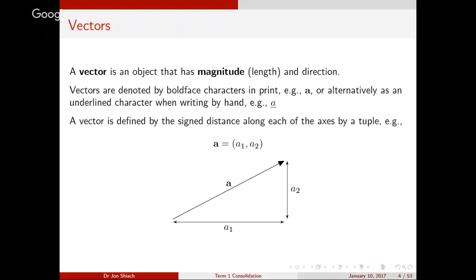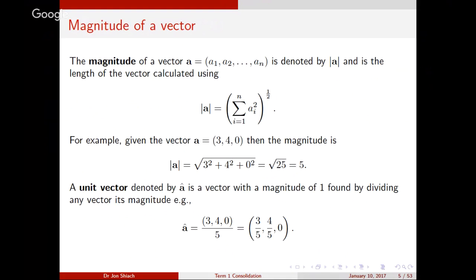And a vector is simply defined by the signed distance along each of the axes by a tuple. So, for example, this is just in 2-D space. There's a vector. That's the tail of it, the bit without the arrowhead. That's the head, the bit with the arrowhead. And the arrowhead denotes the direction it's pointed in. So, the distance between the head and the tail along one dimension, in this case, it's a 1. Along the other dimension is a 2. Quite simple stuff.